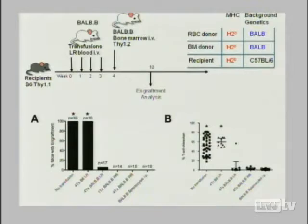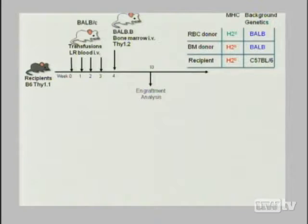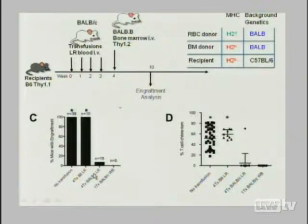Very similar to what was observed in dogs: if the transfusion donor is the same as the bone marrow donor, you get rejection. We then asked the third-party question. When donors are BALB/c — mismatched at minors and majors — we see almost precisely the same phenomenon: transfusions of BALB/c leukoreduced red cells cause rejection in mice that would not have rejected were they not transfused with that foreign blood.